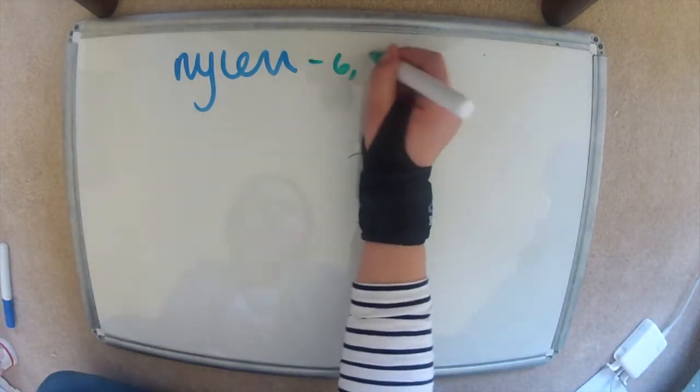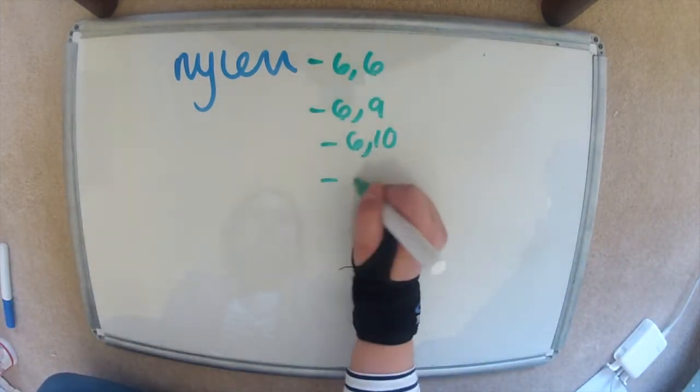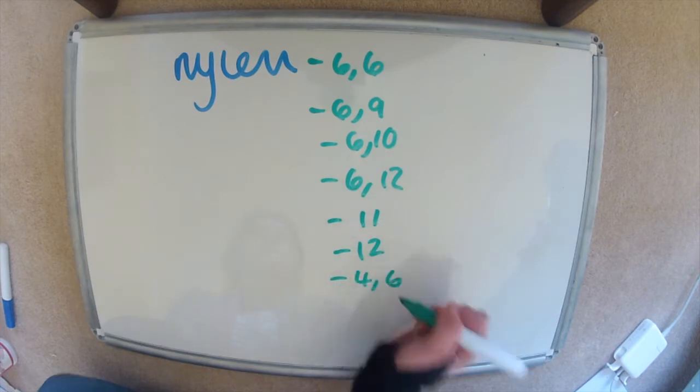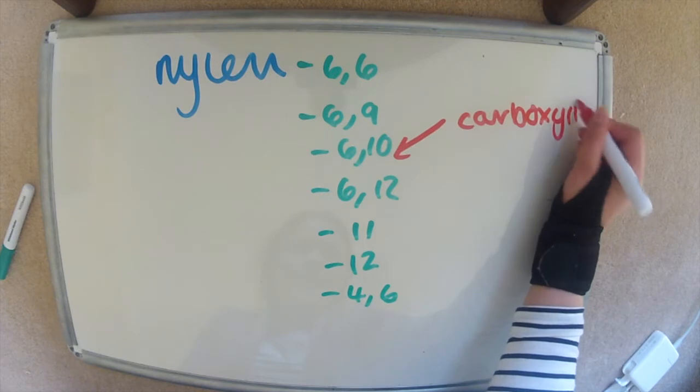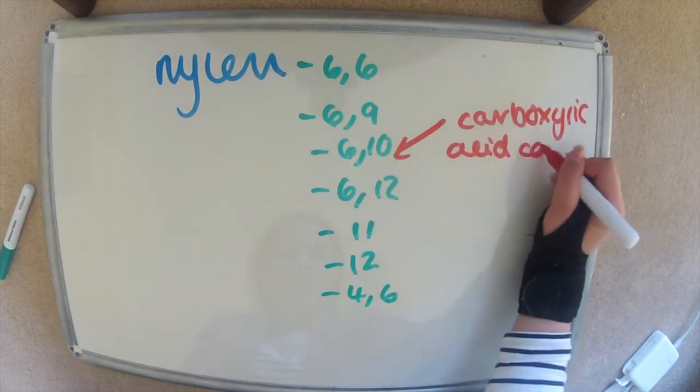Okay, so there's lots of different varieties of nylon. I'm just going to write a whole bunch of them down here. So where there's two, one's a carboxylic acid and one's an amide. And when there's one, it's a carboxylic acid on one side and an amide on the other side of the molecule.